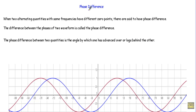In this video I will talk about phase difference. The phase is the angle traveled by an alternating quantity from a fixed reference point. Now when we have more than one alternating quantity, the term phase difference comes into existence.